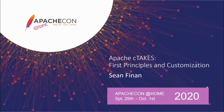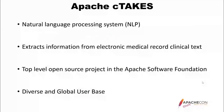I'm going to talk about the first principles of not so much NLP or natural language processing, but what cTAKES does with it. And after that, I'm going to go through some very simple customization — basically some code that you can write for a simple pipeline and put it together and run it. cTAKES is a natural language processing system. It extracts information from electronic medical record clinical text, and it's a top-level open-source project with a pretty large user base all over the globe.